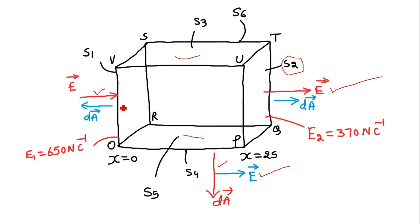Now we assume that the magnitude of the electric field at this face has symbol E1 and as per the statement its value is given to be 650 Newton per coulomb. We assume that the value of electric field at the face PQTU, that is S2 face, is E2 and its value is given to be 370 Newton per coulomb.